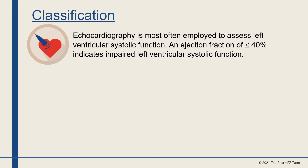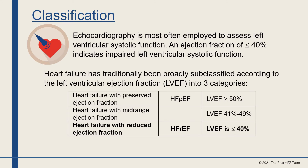Echocardiography is most often employed to assess left ventricular systolic function. An ejection fraction of less than or equal to 40% indicates impaired left ventricular systolic function. Heart failure has traditionally been broadly subclassified according to the left ventricular ejection fraction, or LVEF, into three categories. The first is heart failure with preserved ejection fraction, or HFpEF, with an LVEF greater than or equal to 50%. The second is heart failure with mid-range ejection fraction, with an LVEF of 41% to 49%. The last group — and the most important — is heart failure with reduced ejection fraction, or HFrEF, with an LVEF less than or equal to 40%.